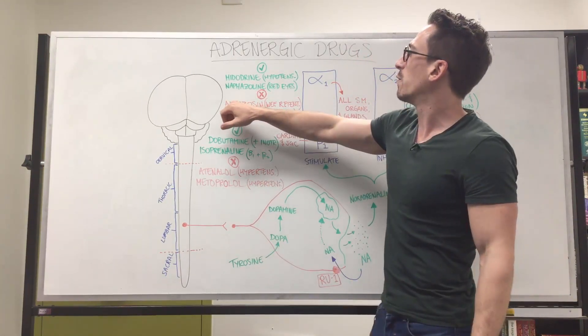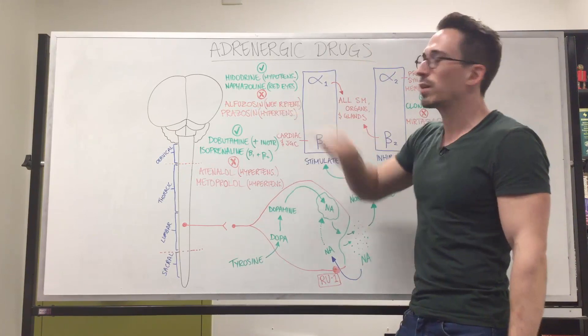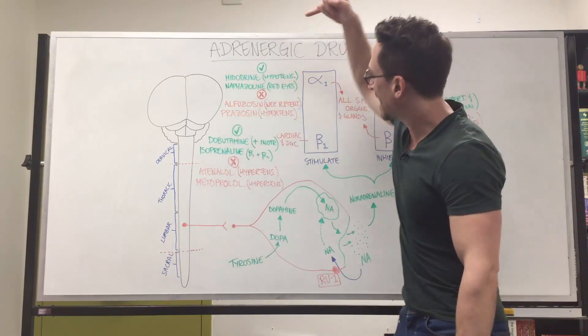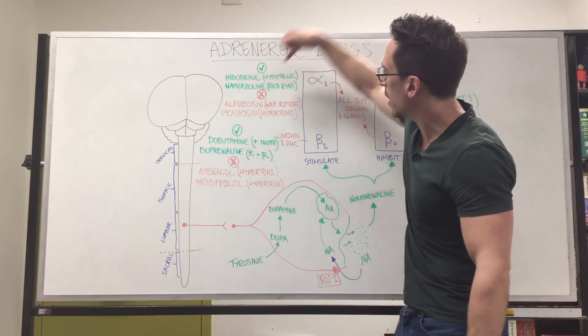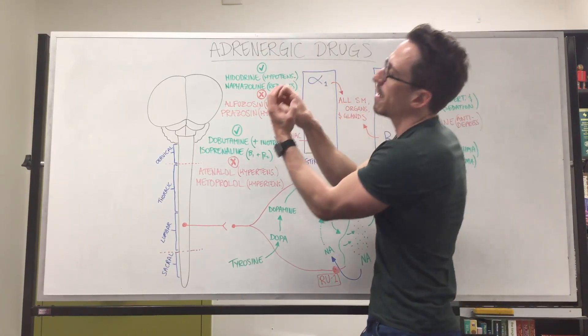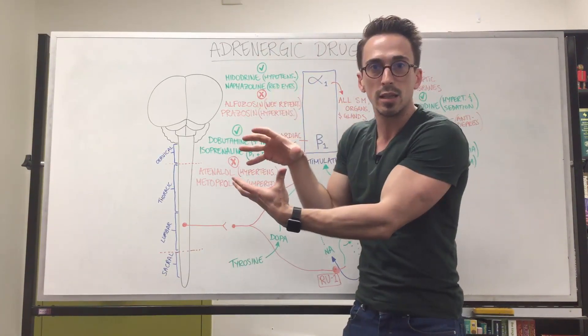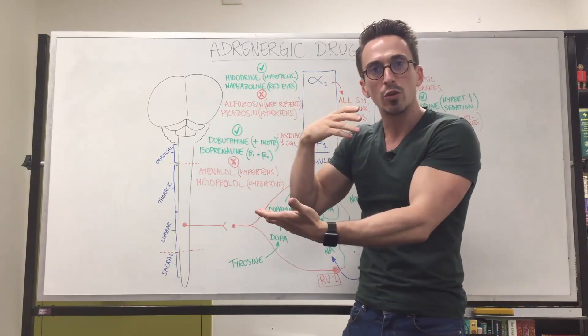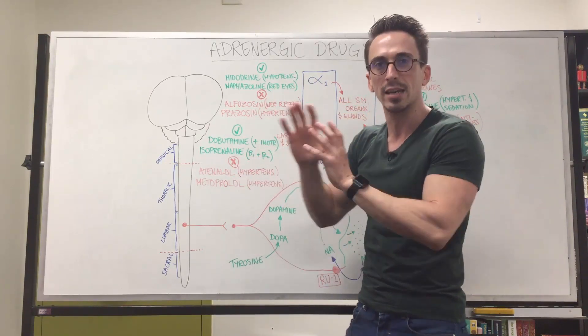We've got alphuzosin, which is there for urinary retention. What it does is it inhibits, it's known as a blocker, an alpha-1 blocker. It blocks this from having its stimulatory effect and therefore the smooth muscles dilate in the urinary system. And so urinary retention is now mitigated. It's stopped.